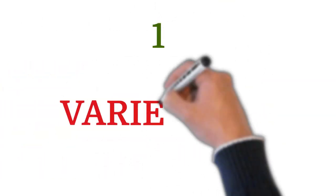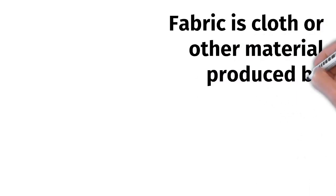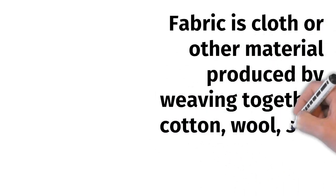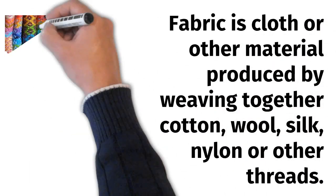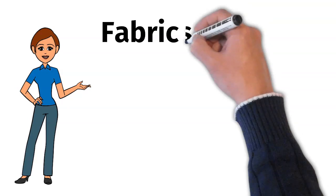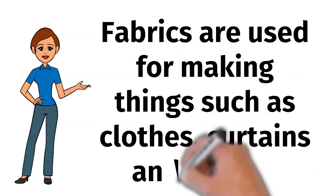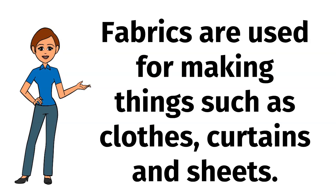First come to the topic variety in fabrics. Fabric is cloth or other material produced by weaving together cotton, wool, silk, nylon or other threads. Fabrics are used for making things such as cloths, curtains and seats.